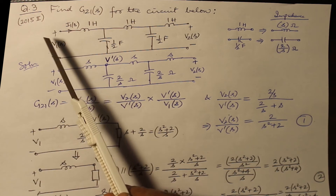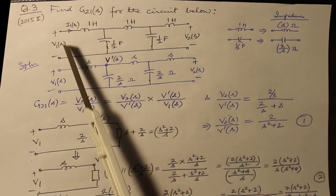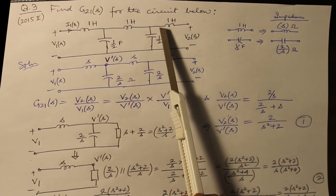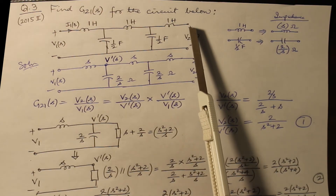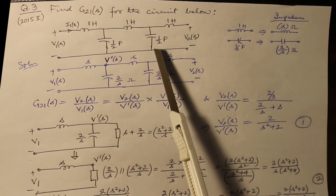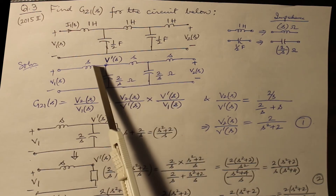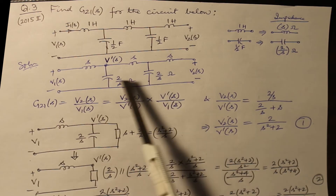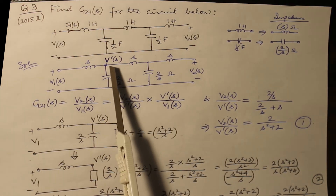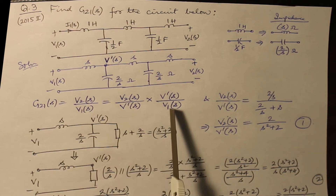Now let us quickly do another example, which appeared in 2015, in which you are asked to find out G21S, meaning V2S over V1S for the given circuit. There are three inductors and two capacitors. We can see that in the inductor of 1 Henry, no current will flow when finding the ratio of voltages. So whatever voltage V2 exists here, the same voltage exists between those two points. All inductances and capacitances are converted to impedances in the transform domain. Let us assume a voltage V dash S at an intermediate node. G21S can be written as V2 by V1, equal to V2 by V dash into V dash over V1.